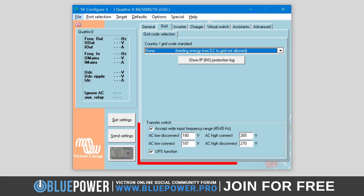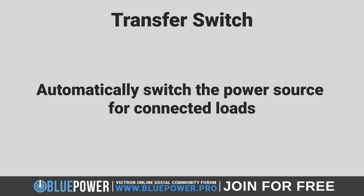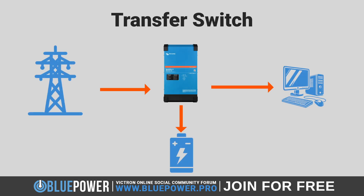The next section deals with the transfer switch built into the inverter. The primary role of the transfer switch is to automatically switch the power source for connected loads. For example, if you have a setup where the inverter is connected to both a grid and a battery, the transfer switch can automatically switch the load from the grid to the battery in the event of a power outage, ensuring uninterrupted power supply.